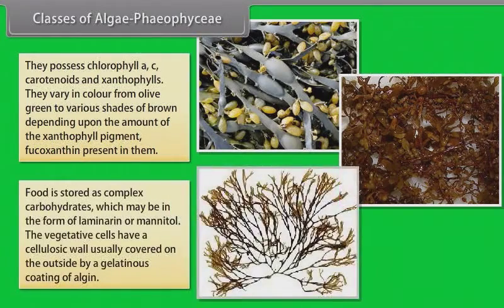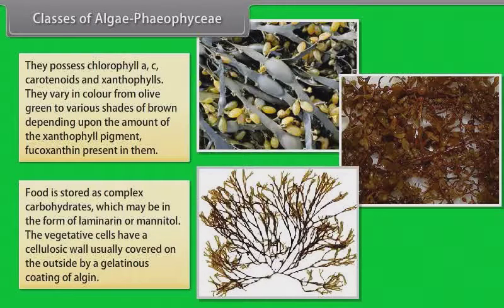Food is stored as complex carbohydrates which may be in the form of laminarin or mannitol. The vegetative cells have a cellulosic wall usually covered on the outside by a gelatinous coating of algin.